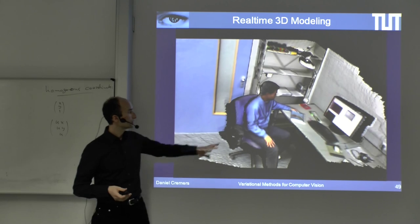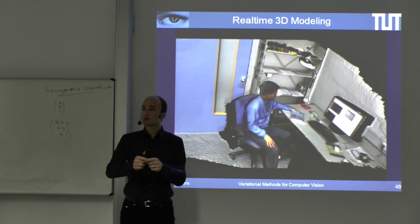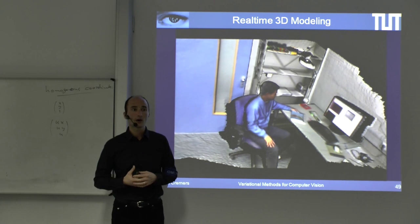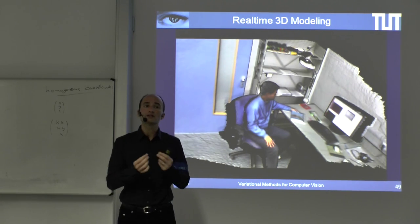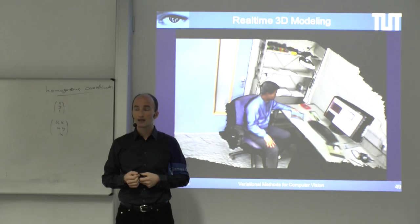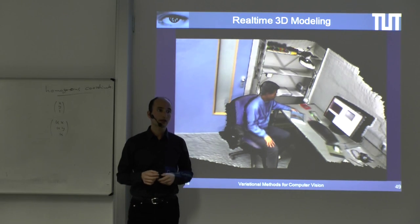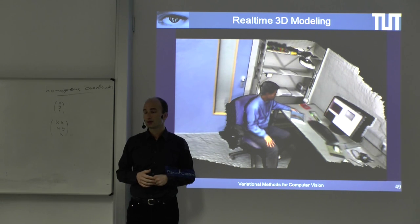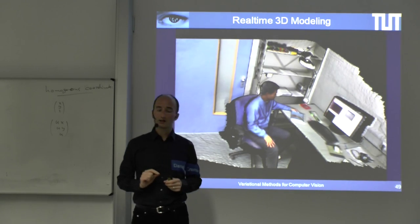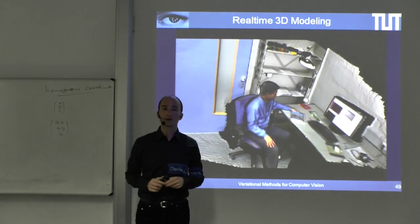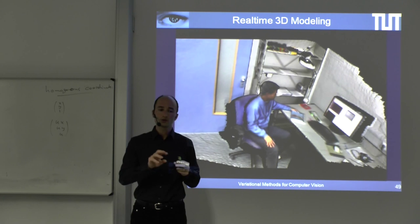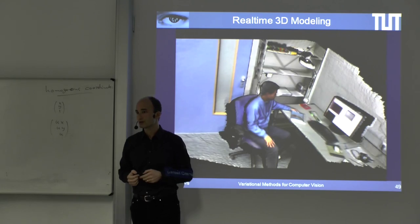In computer vision, we are always working in the regime of what is the optimal solution versus what is the fastest solution. Depending on the requirements of your customer, you will need different strategies. My experience is it's a good idea to first think about what the optimal solution would be and how computationally intense it is, and then think about speed. If you start with speed as the primary concern, you will typically never get to the best possible solution.